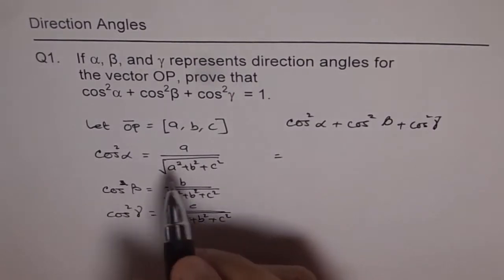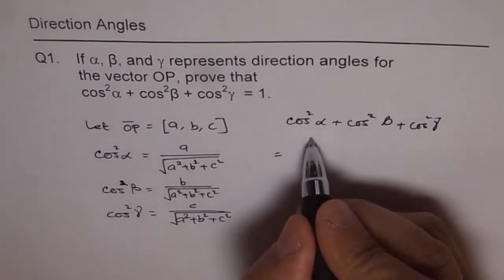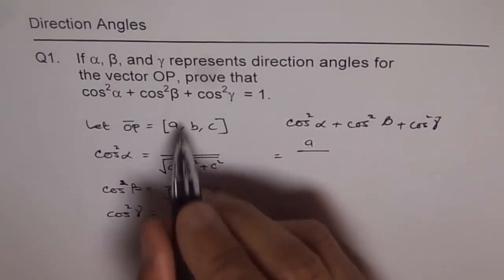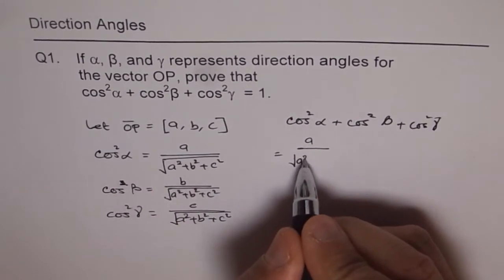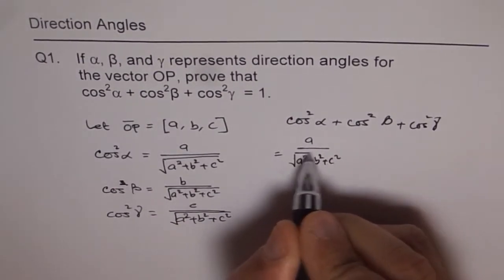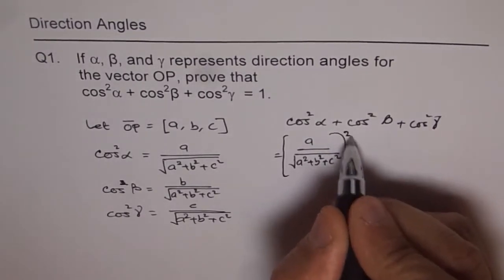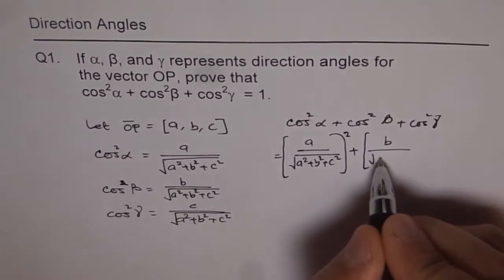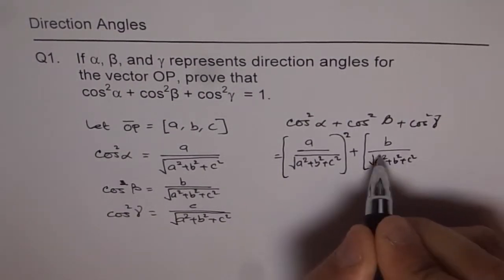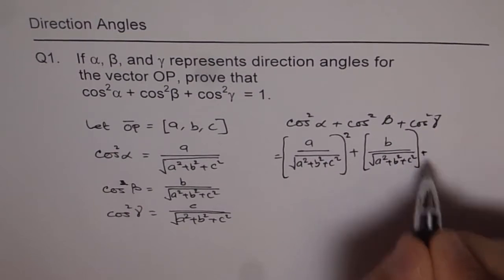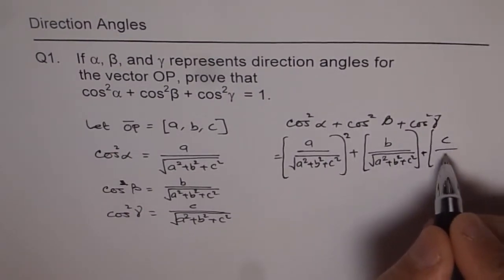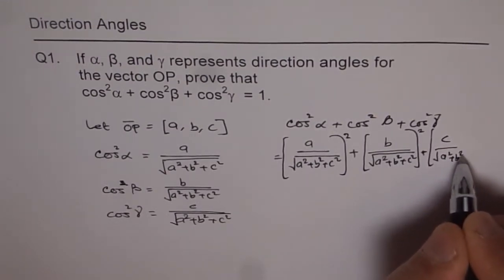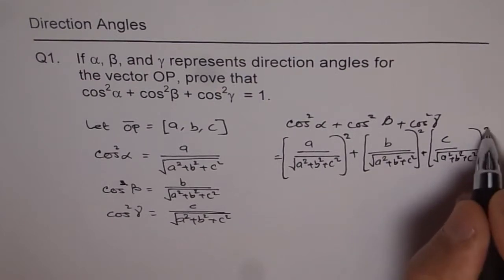So if we write this, then we have A over magnitude of OP, A square plus B square plus C square, everything square, plus B over A square plus B square plus C square. You can see where we are heading. C over square of this, magnitude A square plus B square plus C square, square.